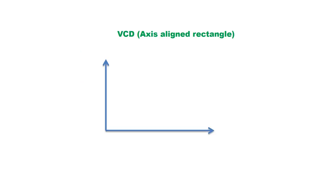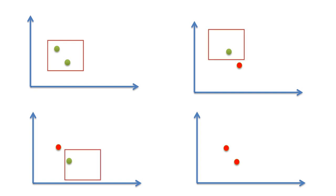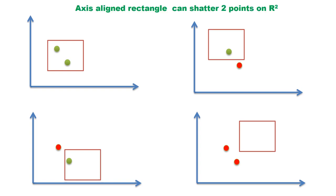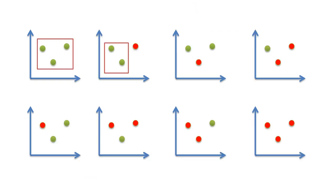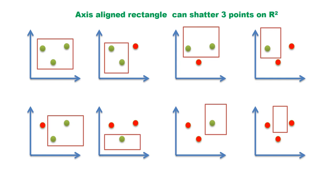Now consider the case of four data points: there are 16 different ways of classification, and we cannot find any single set of four points that can be shattered by a straight line. Therefore, the maximum number of points in a two-dimensional plane that can be shattered by a straight line is three, and the VC dimension of a straight line in a two-dimensional plane is three. Next, find the VC dimension of an axis-aligned rectangle — a rectangle whose edges are parallel to the coordinate axes. We assume all data points inside the rectangle are positive and outside are negative. For two points, all four cases are possible. For three points, all eight cases are possible. Hence, an axis-aligned rectangle can shatter three points on a two-dimensional plane.